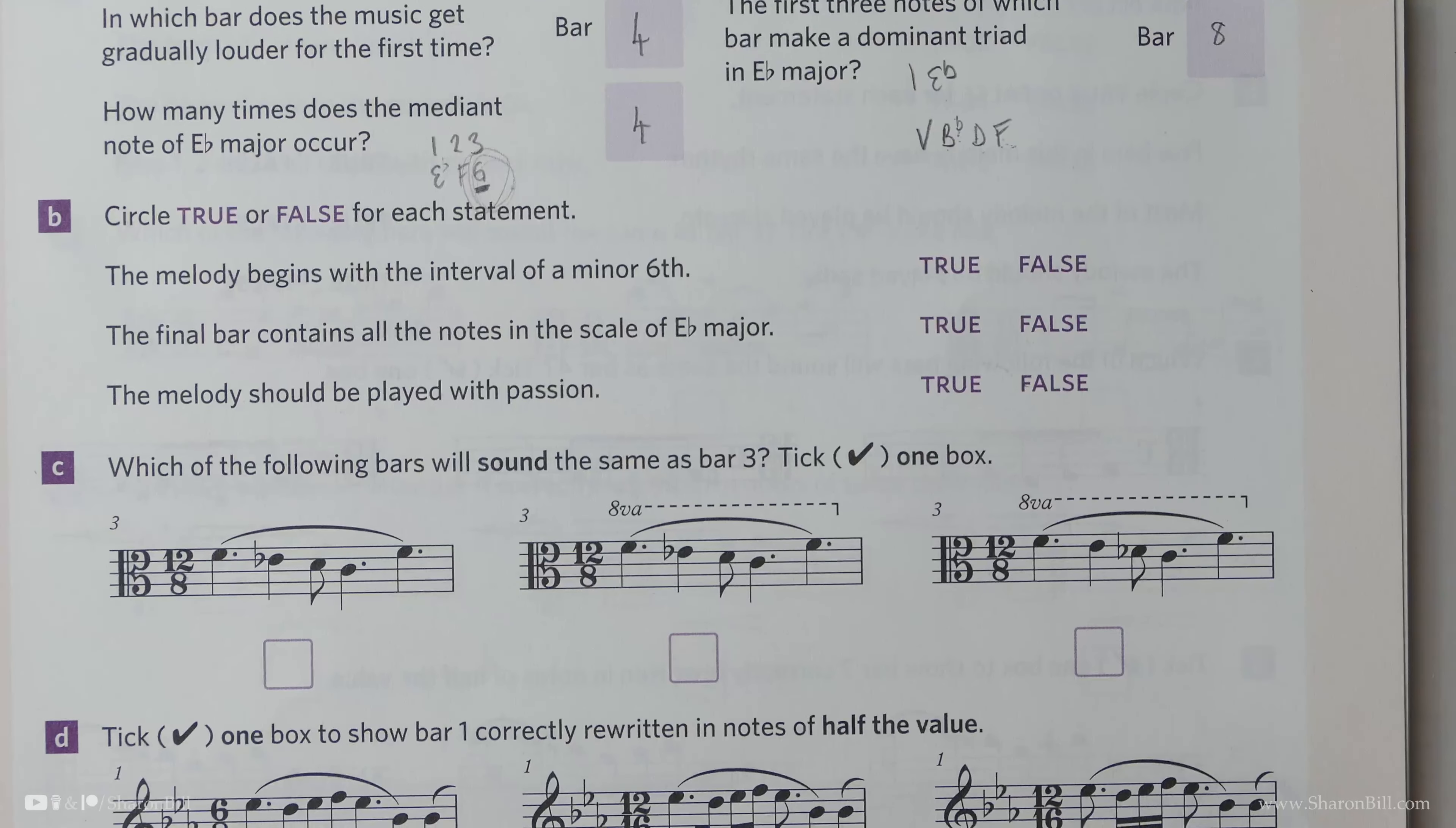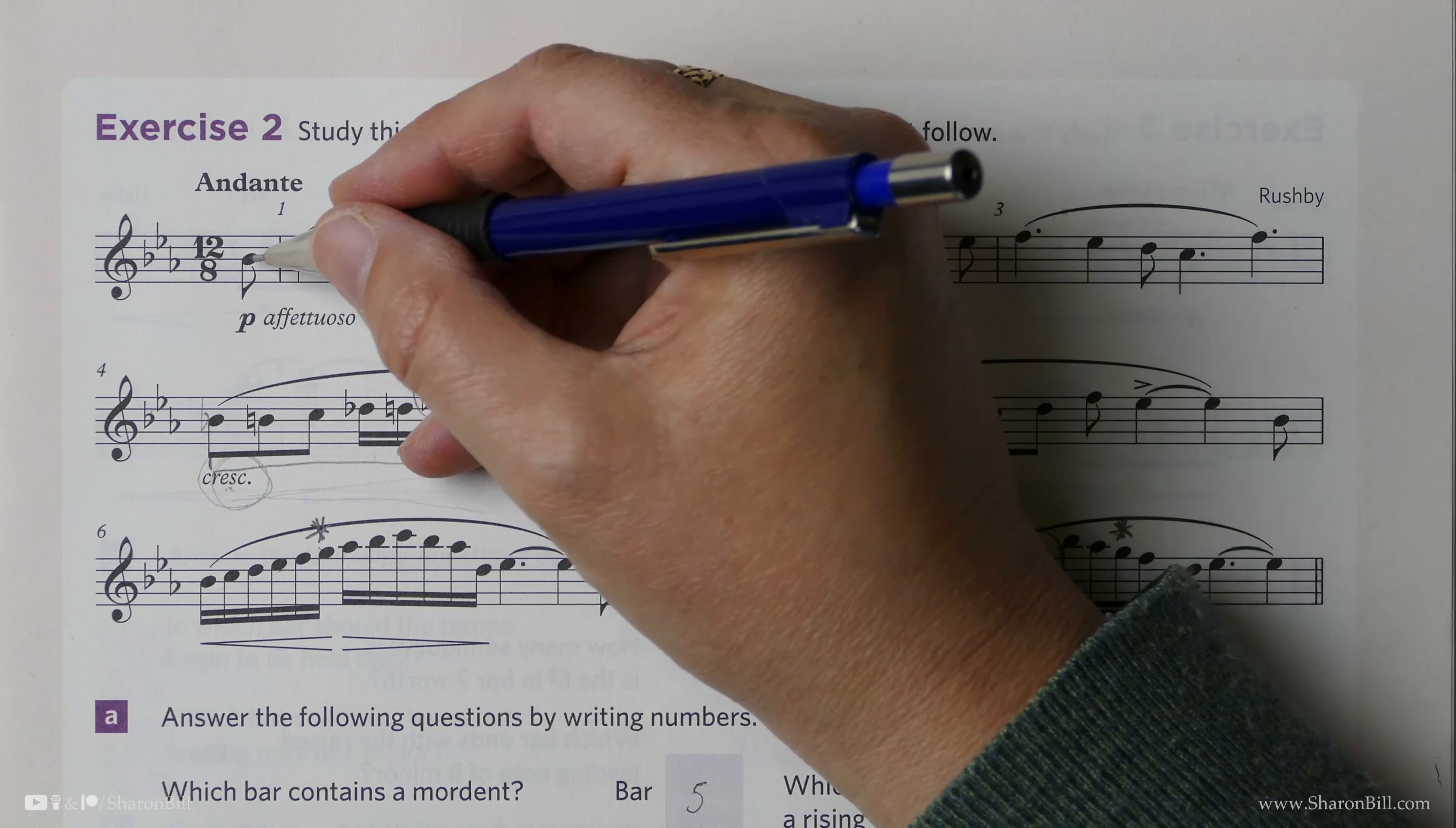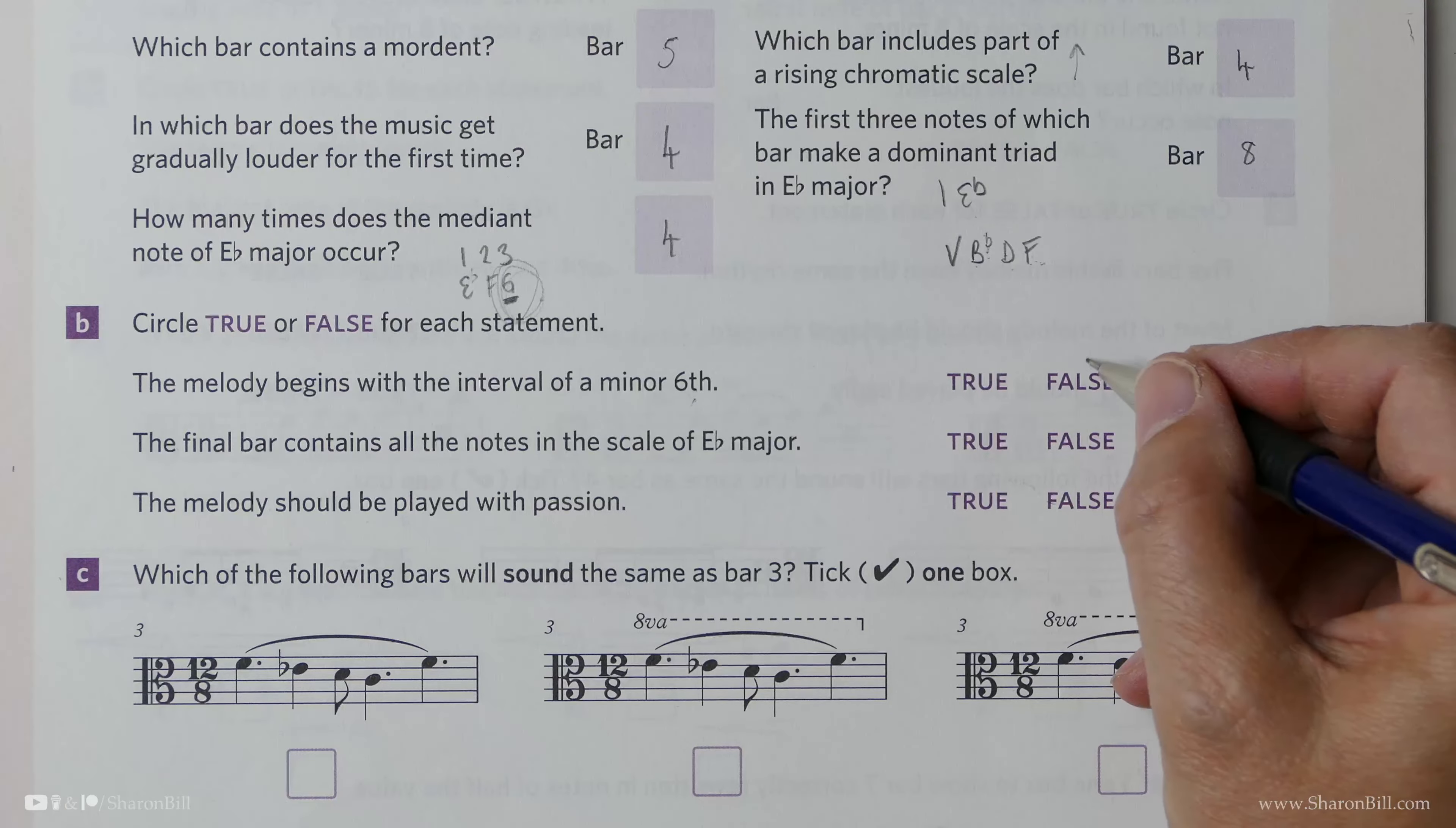Okay, is it true or is it false that the melody begins with the interval of a minor sixth? What do we begin with? So before we worry about major, minor, or anything like that, let's find out the number. We have one, two, three, fourth. So that's a fourth, not even a sixth of any sort. So that's false.